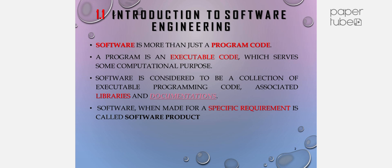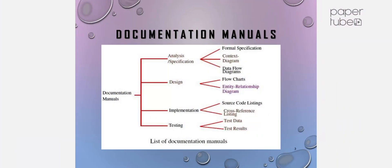Software made for a specific requirement is called a software product. Different types of documentation manuals are necessary. After analysis or specification, we formulate formal specifications — context diagrams, data flow diagrams. After design, we have flow charts and ER diagrams. After implementation, source code listings and cross-reference listings. After testing, test data and test results.